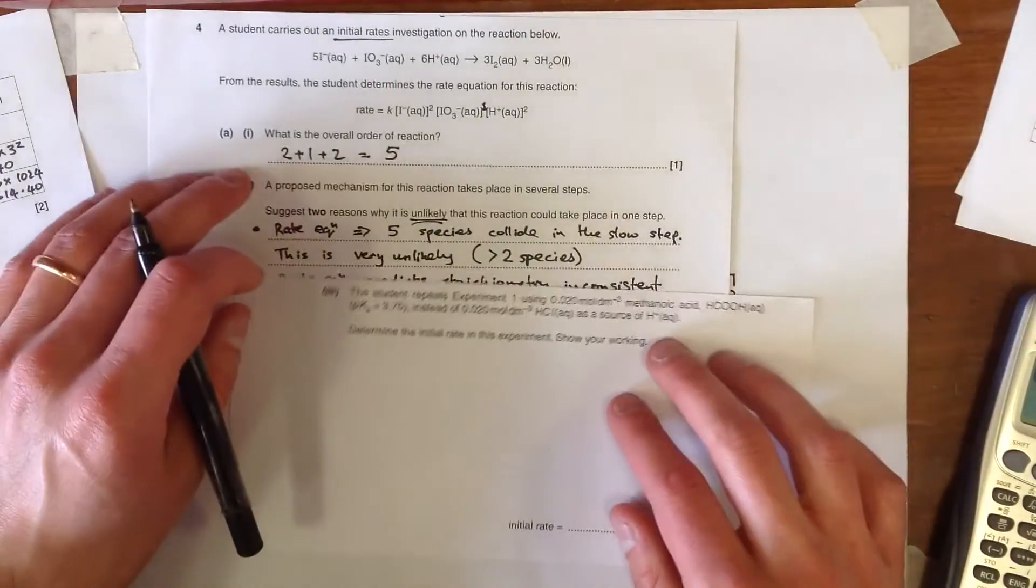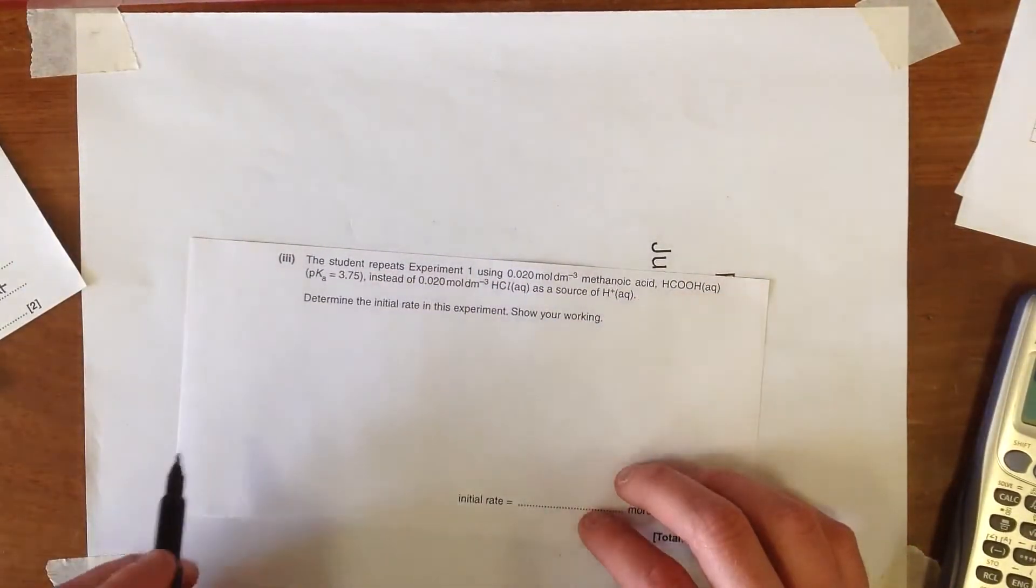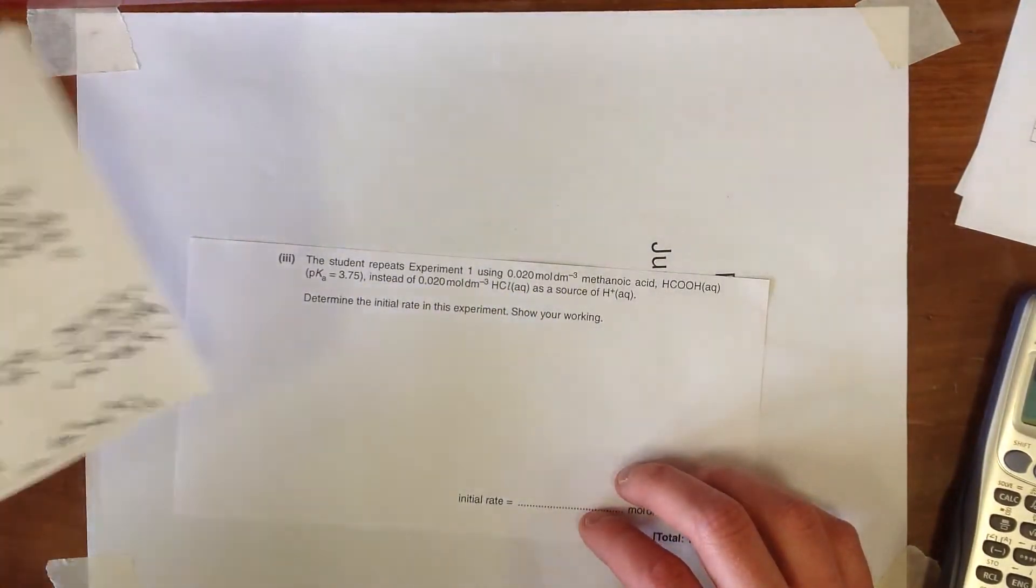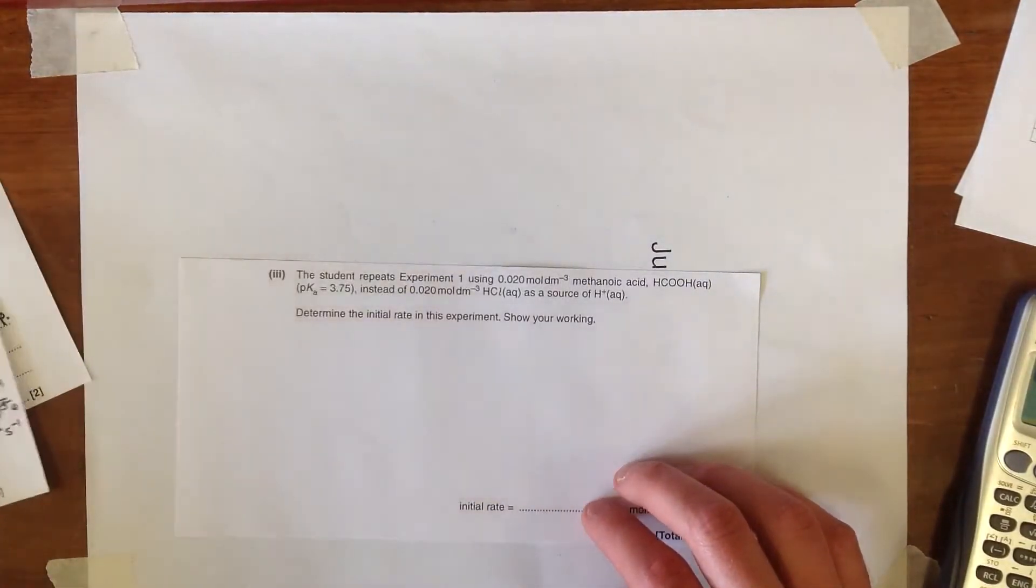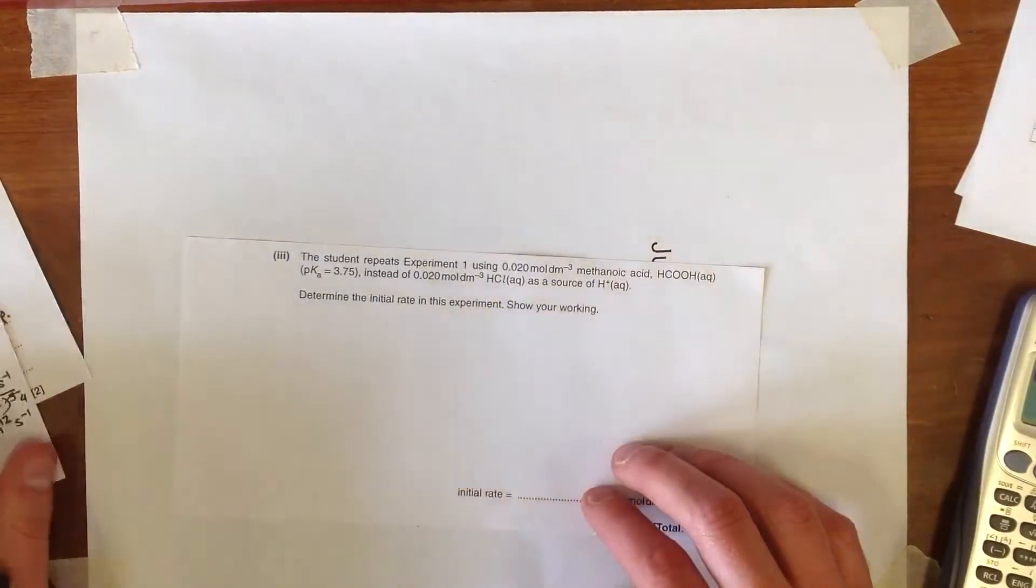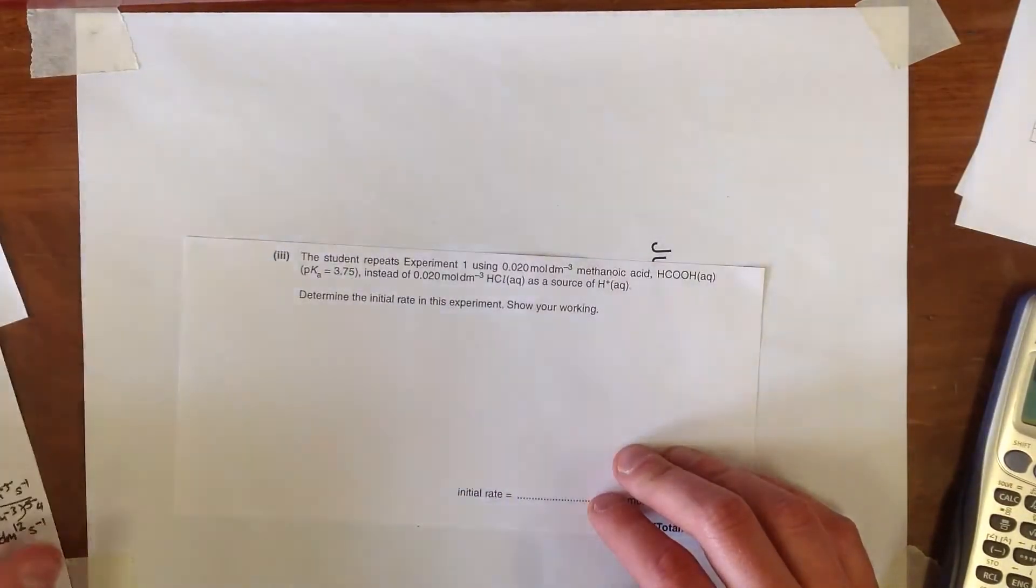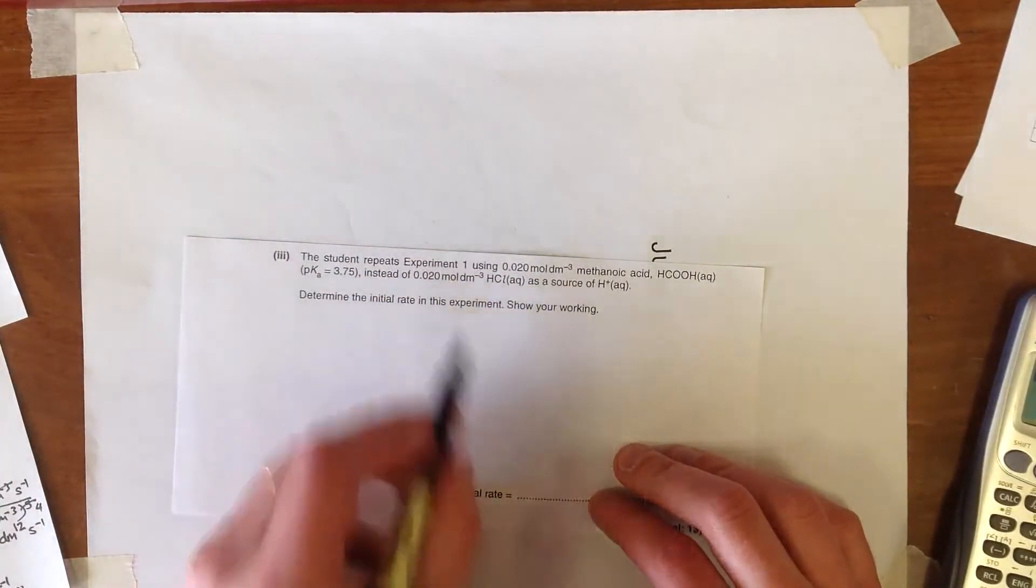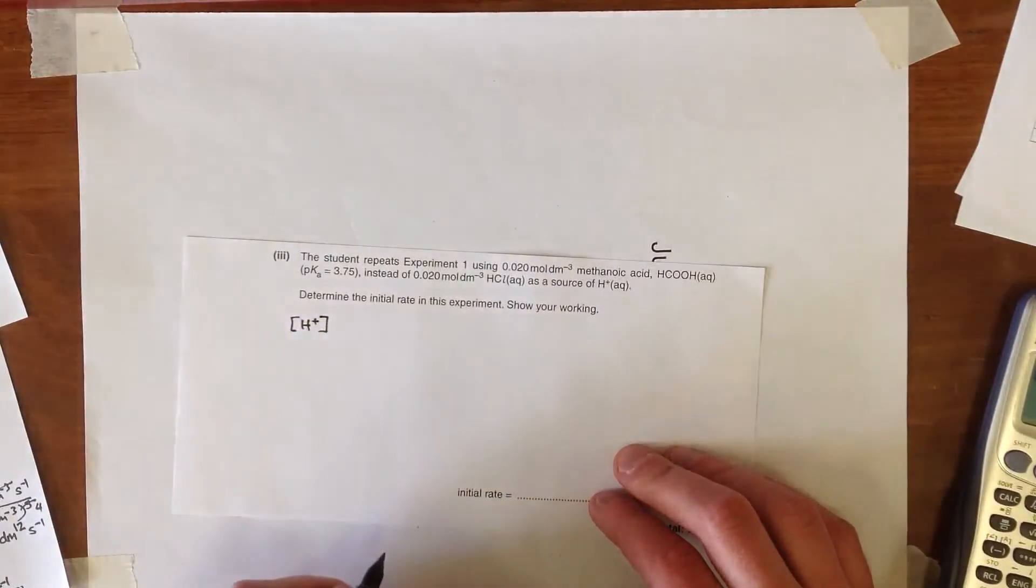And the final part of this question is saying that the student is repeating it using, this time, some methanoic acid instead of the equivalent concentration of HCl. So it's very much a similar reaction to experiment 1, but this time we're going to have a lower concentration of H+, and that's what actually determines the rate of the reaction. It's the H+, because this is actually a weak acid, and we know that because the pKa is bigger than zero.